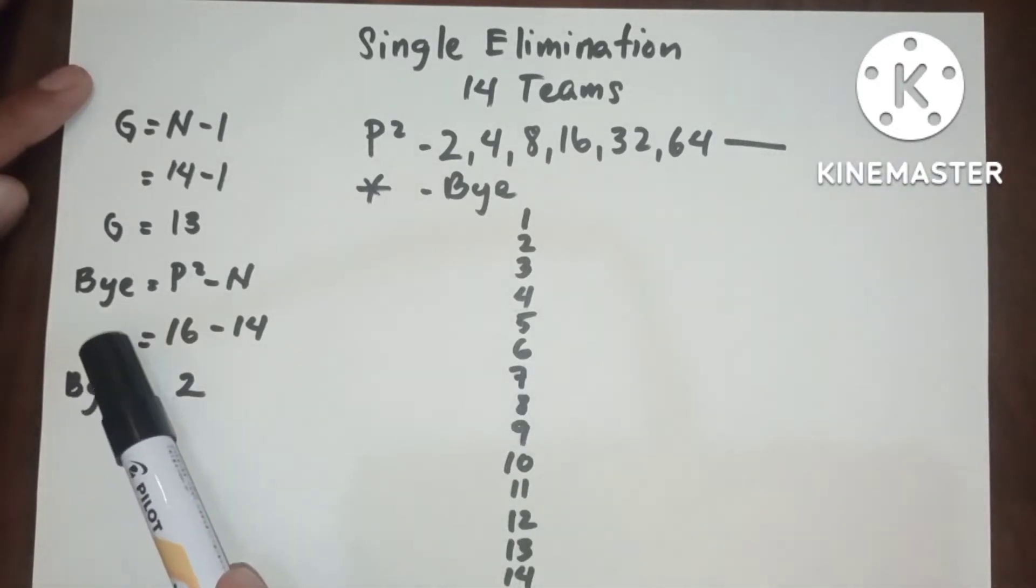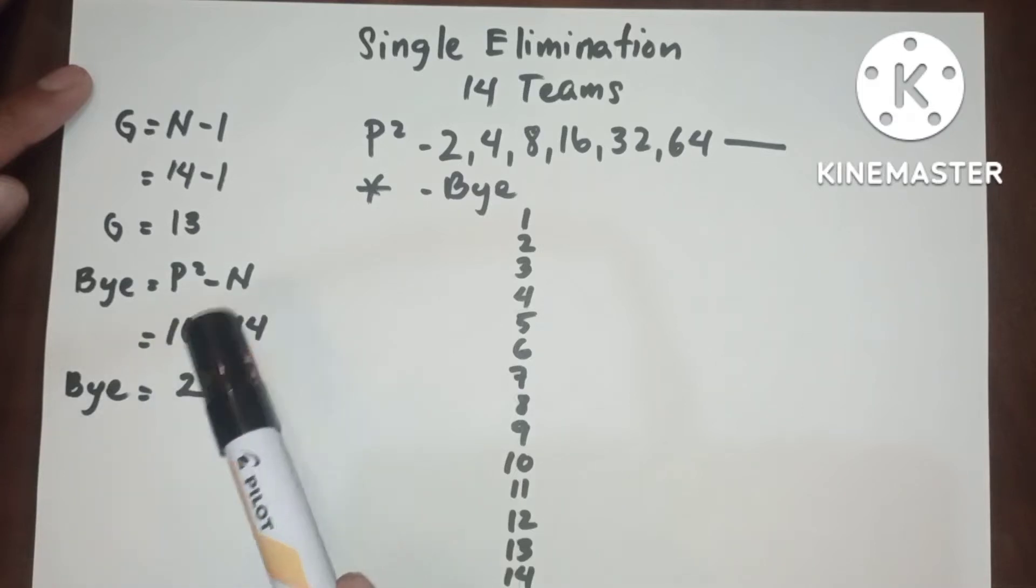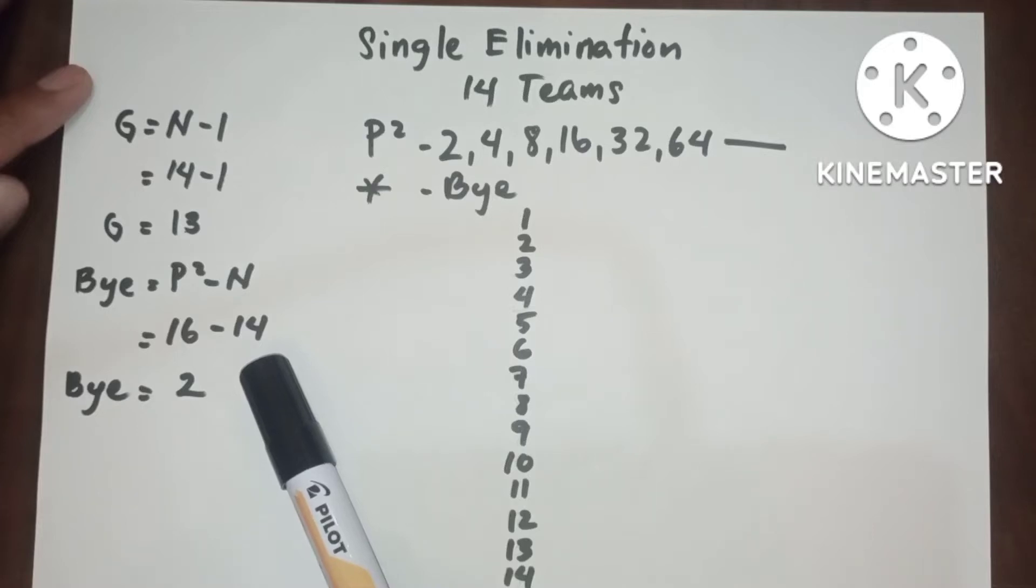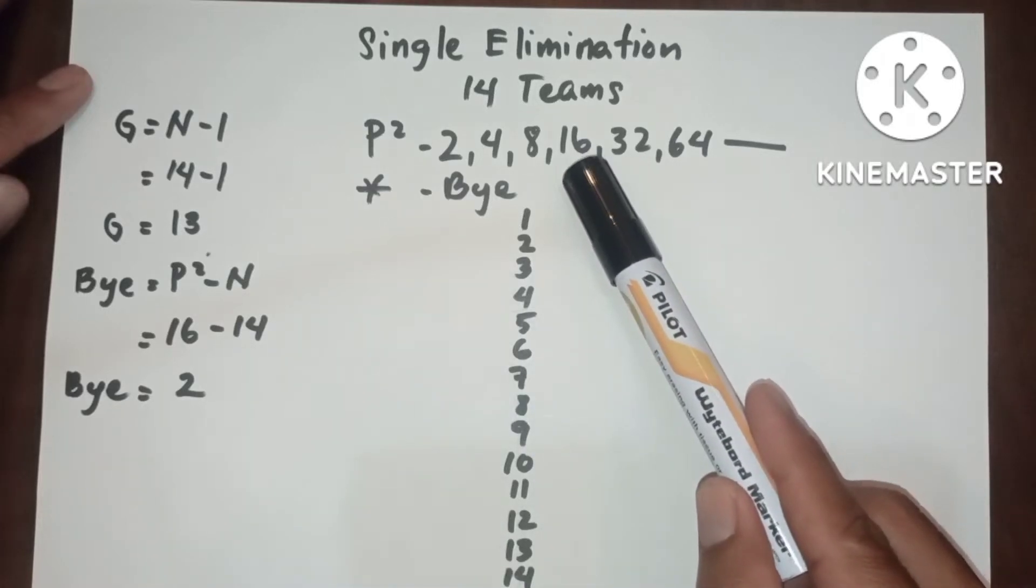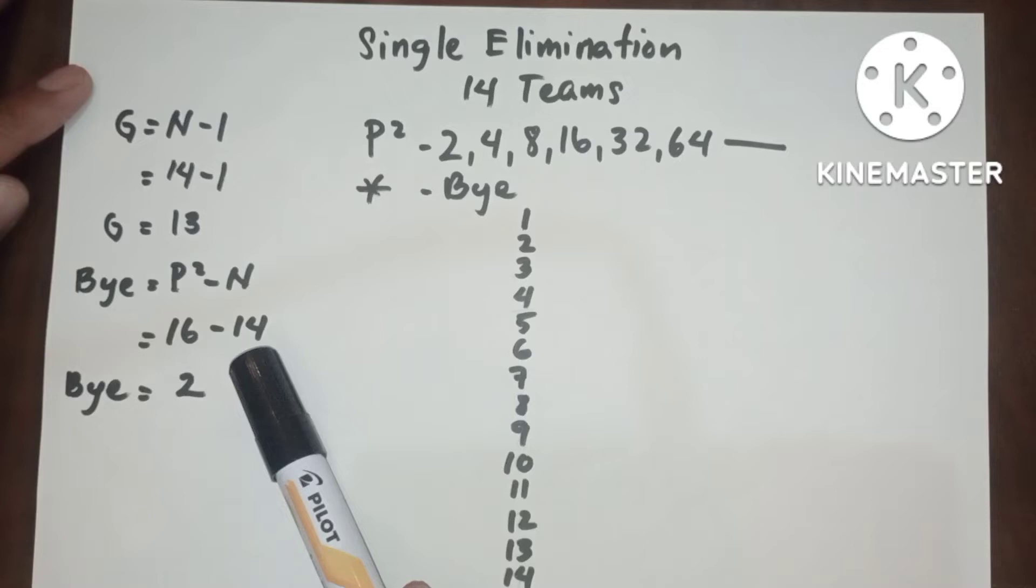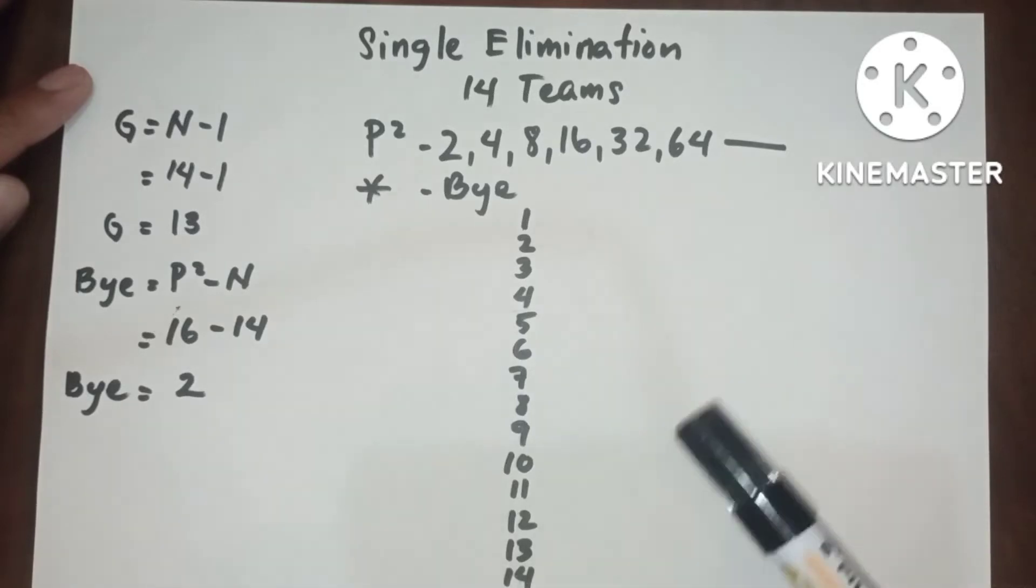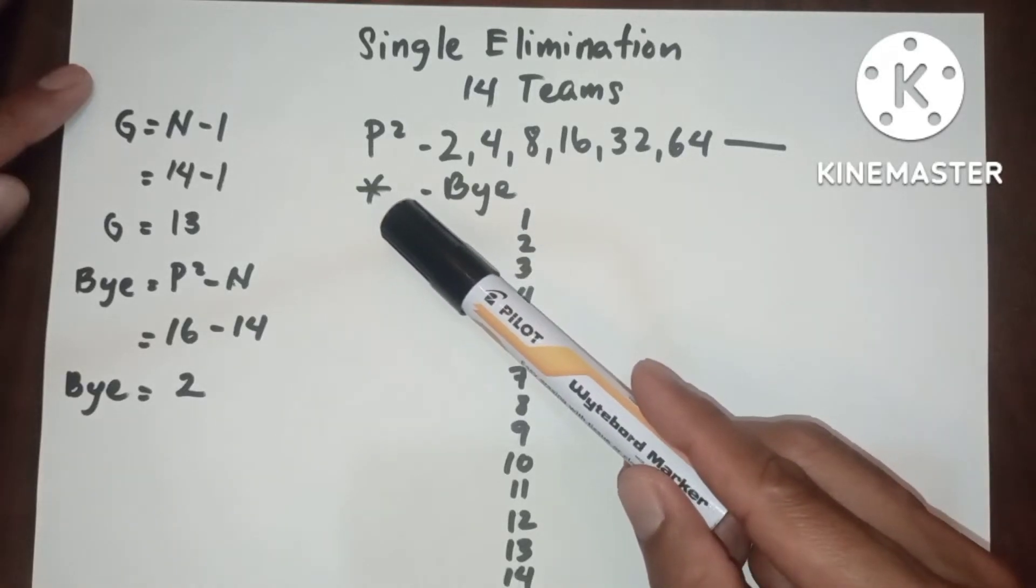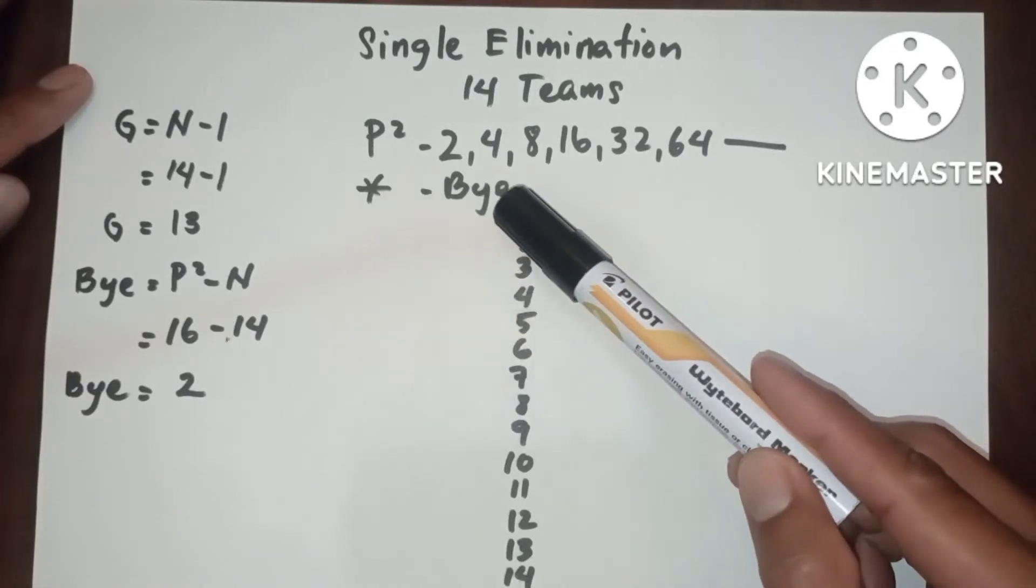We have bye equals power of 2 minus N. The next higher power of 2 to 14 is 16, so that 16 minus 14 equals 2, meaning we have two byes. Please take note that we use the asterisk to identify the bye.